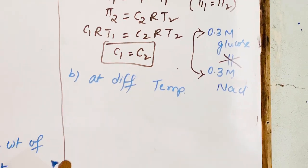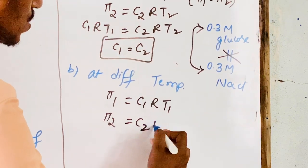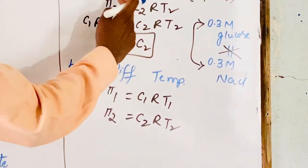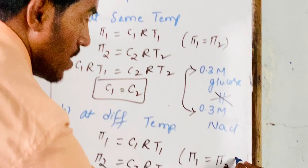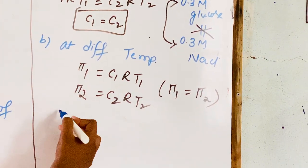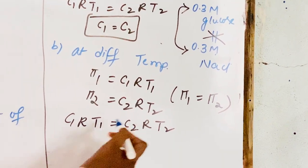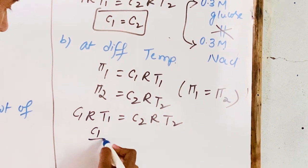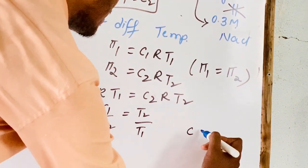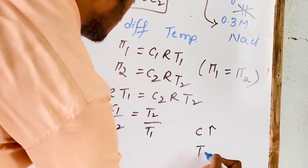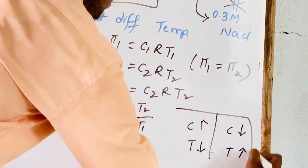With respect to different temperatures, Pi₁ = C₁RT₁ and Pi₂ = C₂RT₂. When Pi₁ = Pi₂, R cancels, giving C₁/C₂ = T₂/T₁. This means if the concentration of a solution is high, the temperature is low, and if the concentration of the solution is less, the temperature will be high.